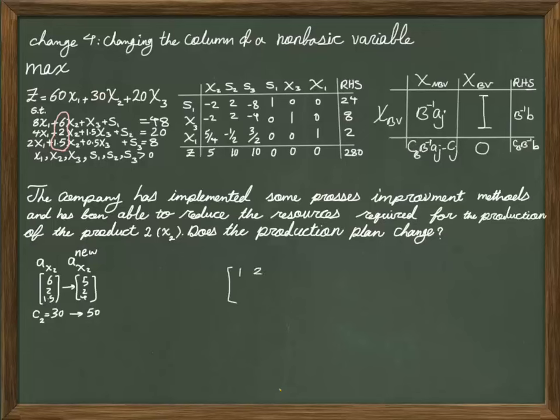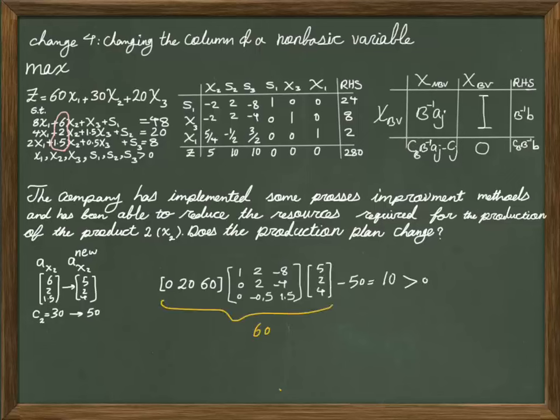So let's recalculate CBB inverse AJ minus CJ. This is my B inverse, this is my CB, and this is my AJ, the new AJ. Remember for that, here you have to put your new AJ. And your CJ again here should be your new CJ, which is 50 this time. So if I calculate the CBB inverse AJ minus CJ, I get 10, and 10 is positive. So I remain in the same optimal table.